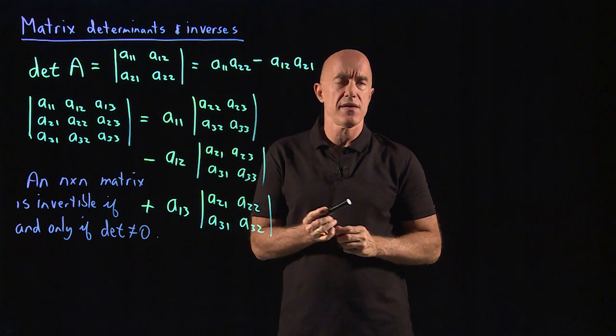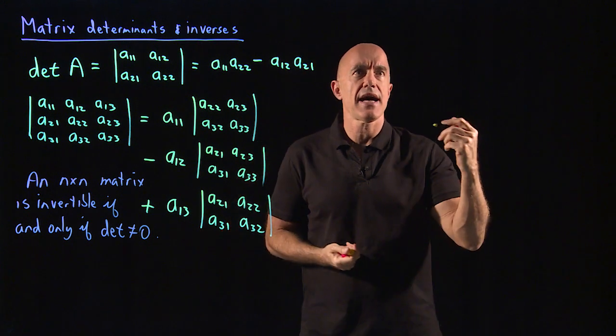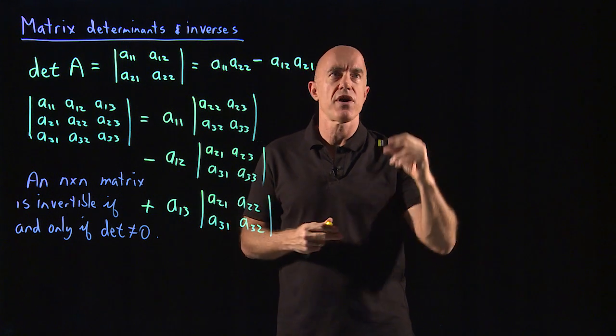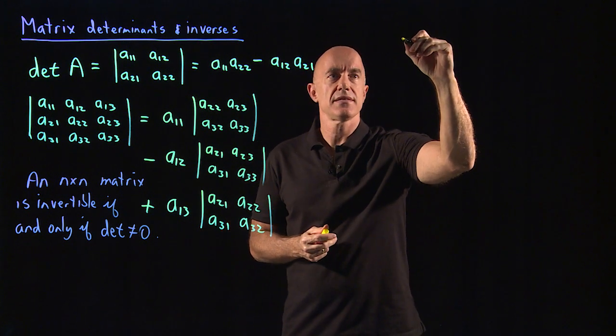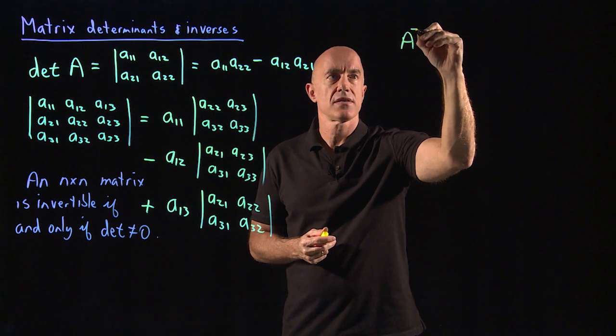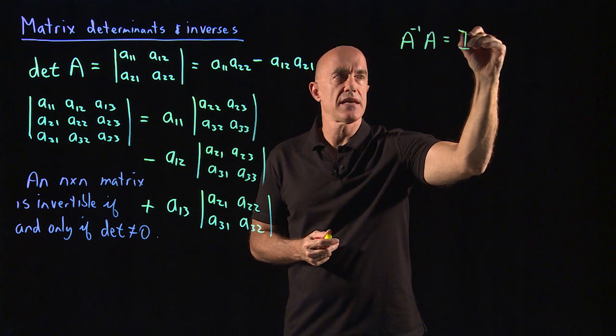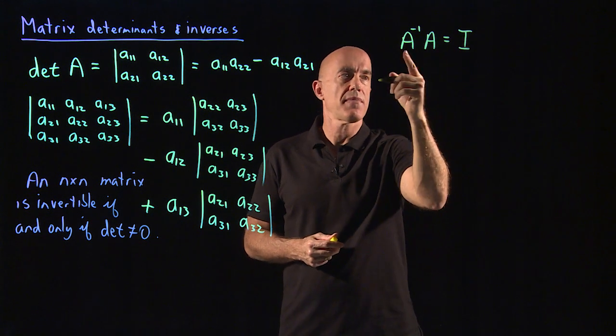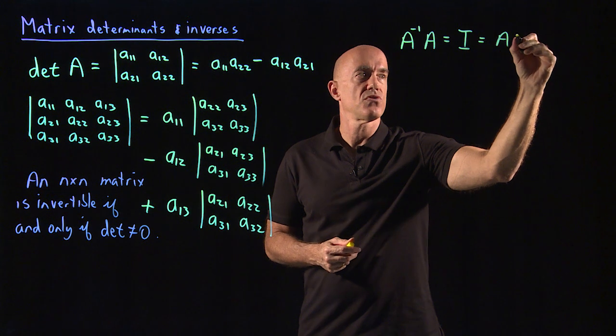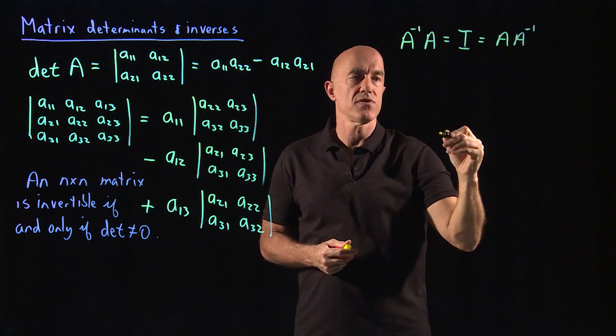What does it mean to be invertible? It means that this is only for square matrices. It means that the inverse matrix times the matrix is equal to the identity matrix. And it doesn't matter which way you multiply. This is also true for A times A inverse.